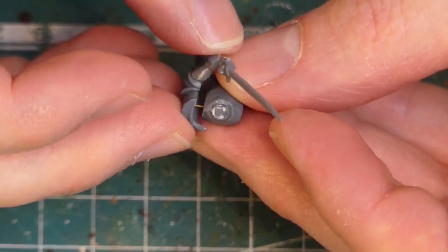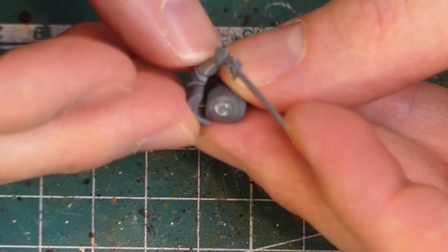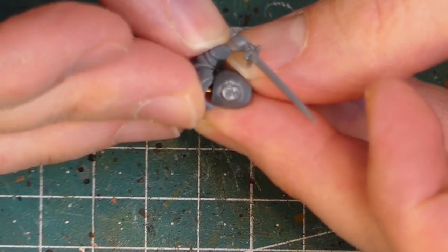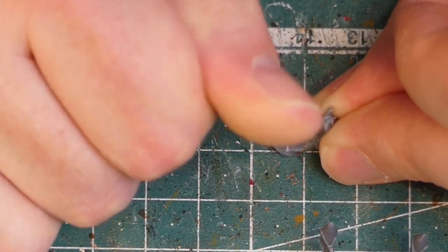For this knight his new arms come from the Perry Miniatures Foot Knights 1450 to 1500. However there is also a connection with brass wire needed. The procedure is the same as for the legs.